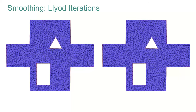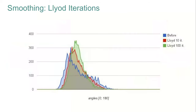To improve the minimal angle and the general distribution of angles, it is possible to run a Lloyd optimization procedure that will iteratively move vertices to the centroid of their Voronoi cells. As you can see in the following example, the more iterations we do, the more the distribution of angles is centered around 60 degrees, and the more its deviation is reduced.